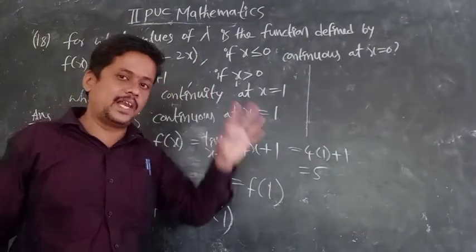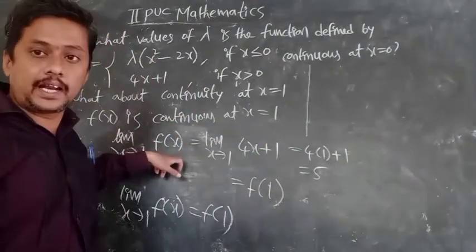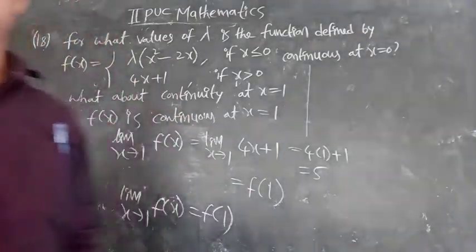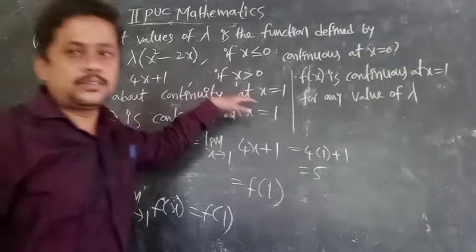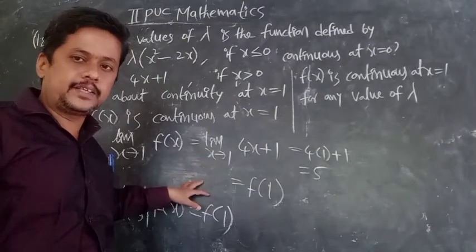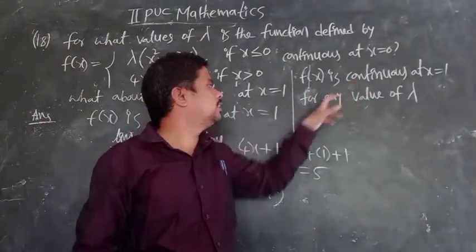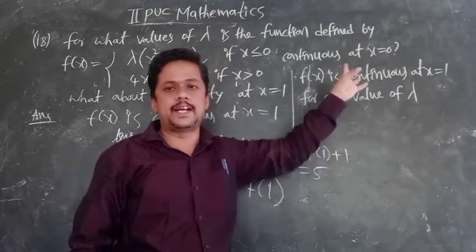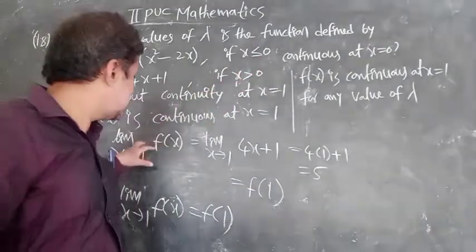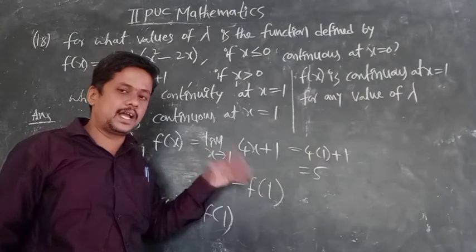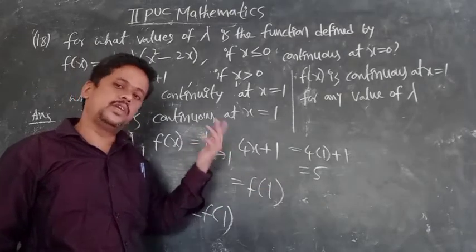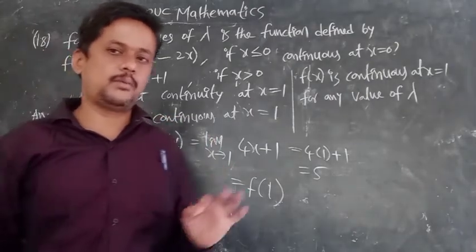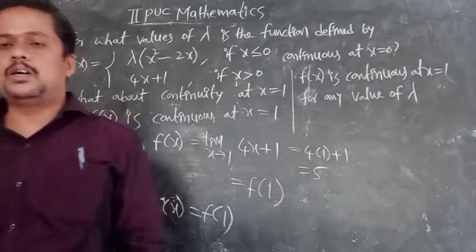f(x) is continuous at x = 1 for any value of lambda. This is because lambda does not appear in the function used at x = 1, which is 4x + 1. So whatever lambda value you consider — 2, 3, 4, 5, -2/3, -5/3 — f(x) is continuous at x = 1 for any lambda. So you can take any lambda value for continuity at x = 1.